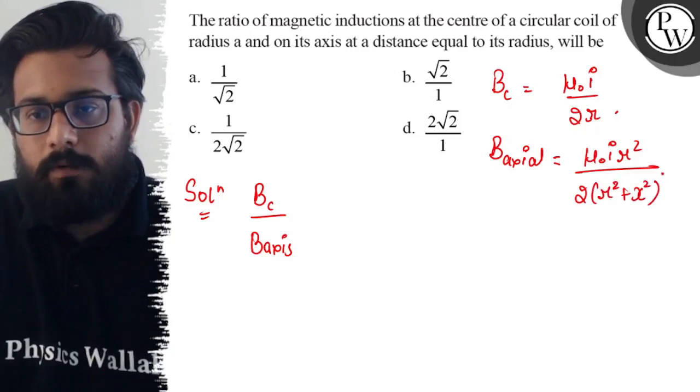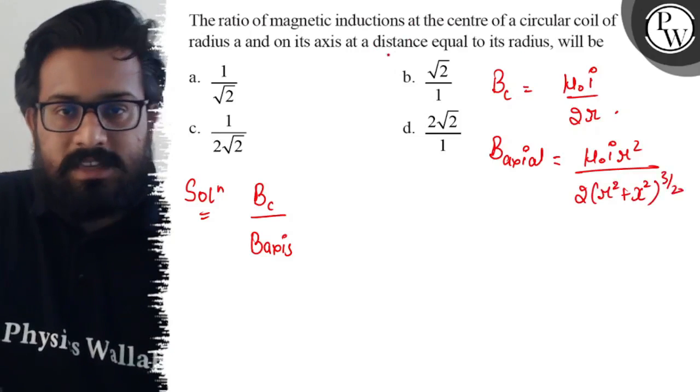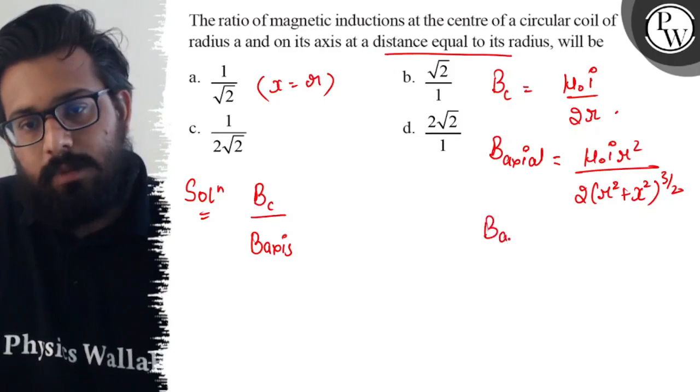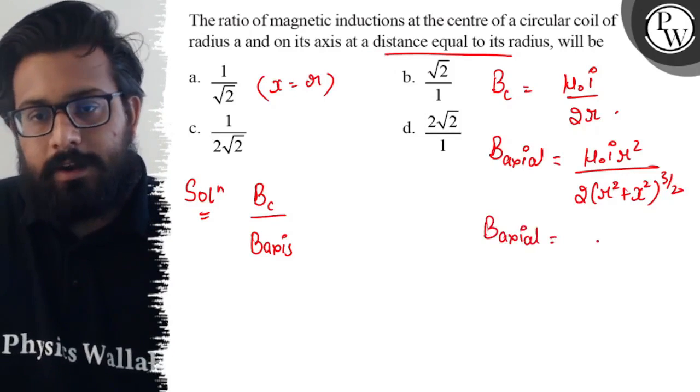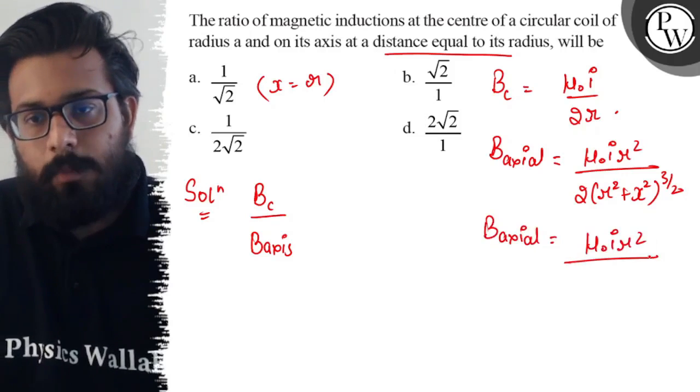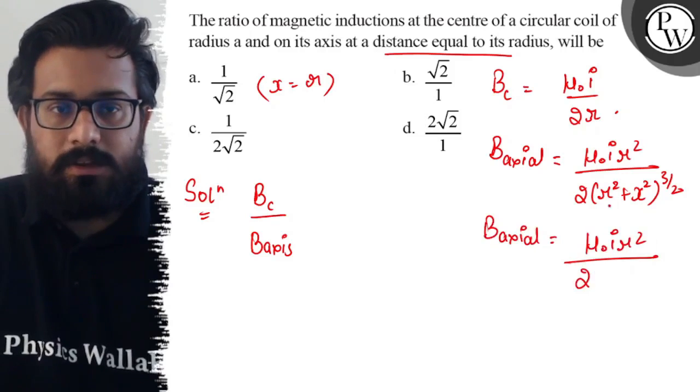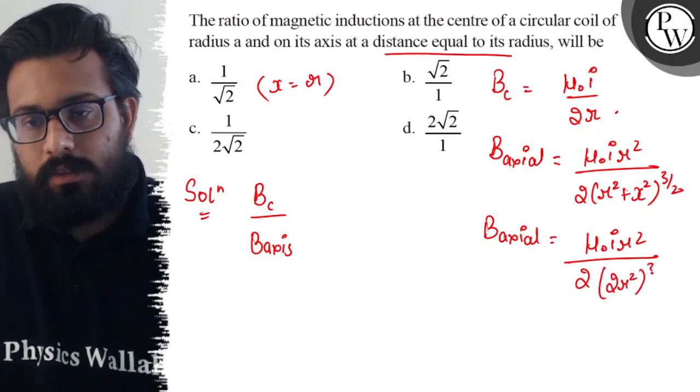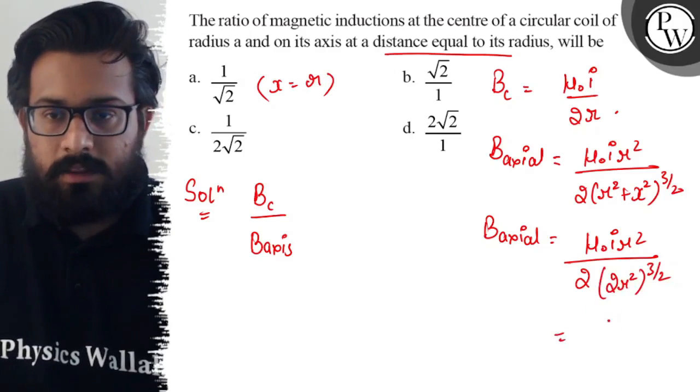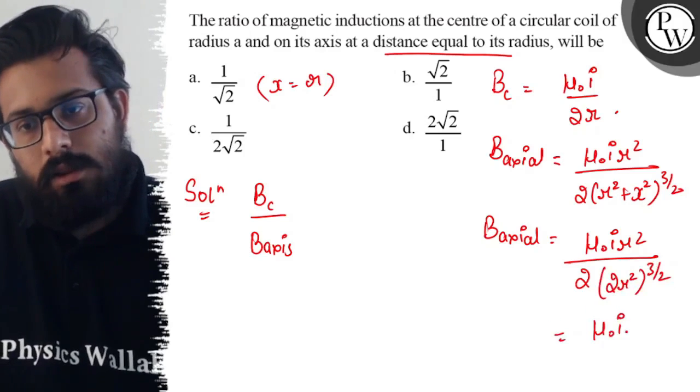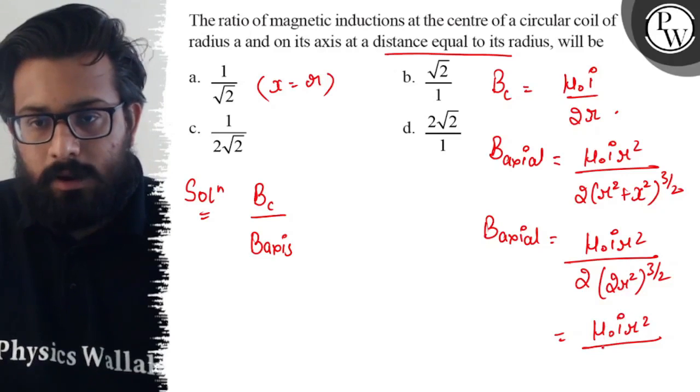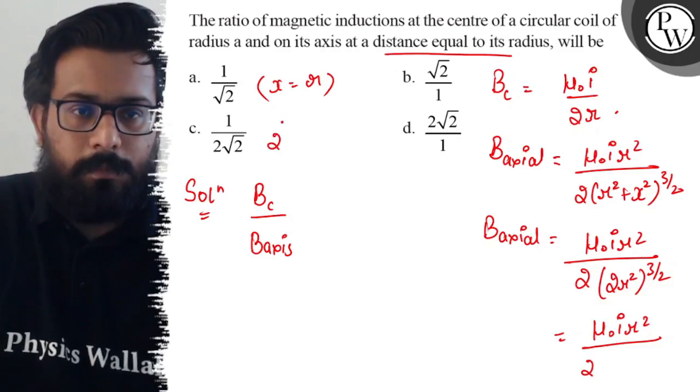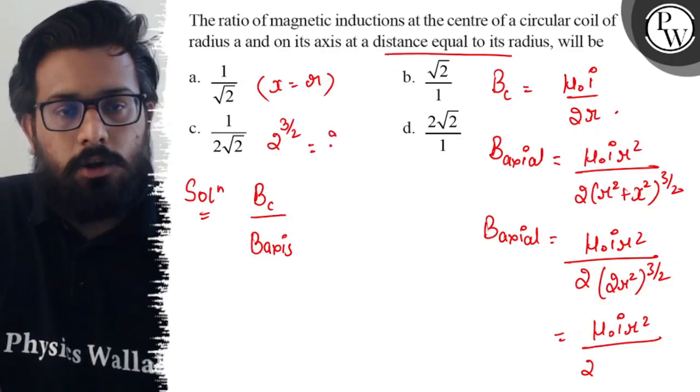Now the distance is equal to the radius, where x is equal to r. So Bx can be solved further and it can be written as μ₀Ir² upon 2 times (r² + r²)^(3/2), so 2r² to the power 3 by 2. So it comes out to 2 root 2.